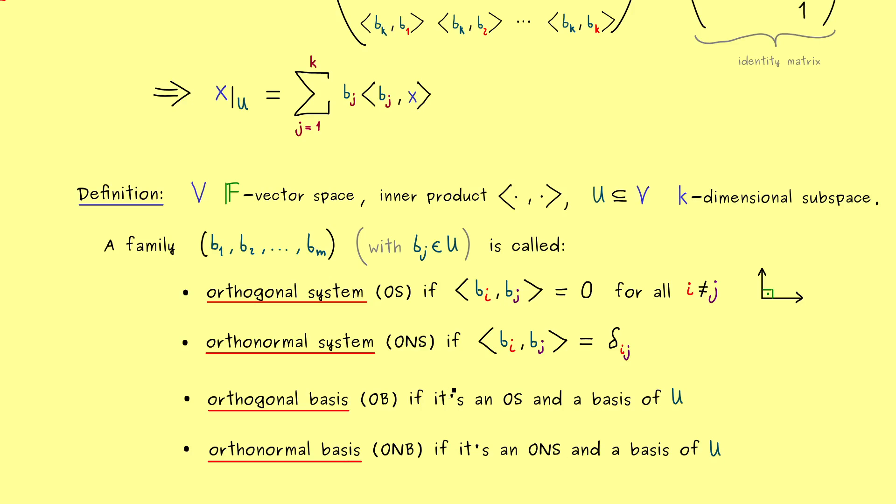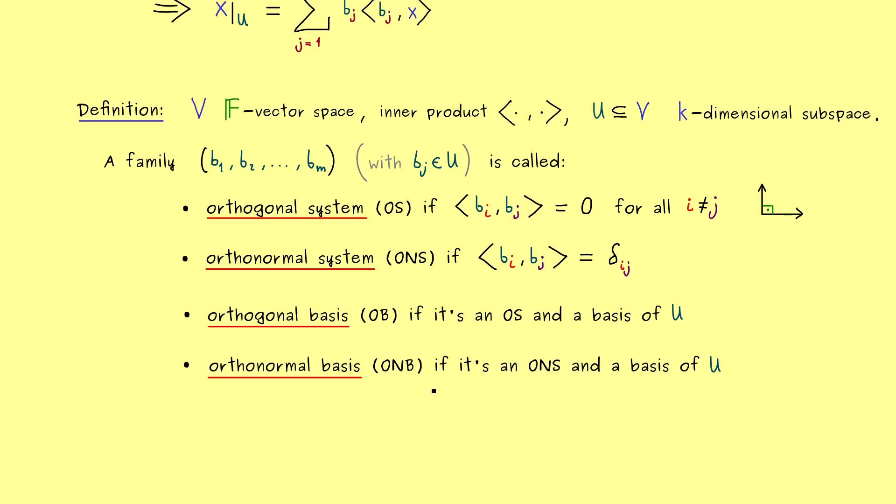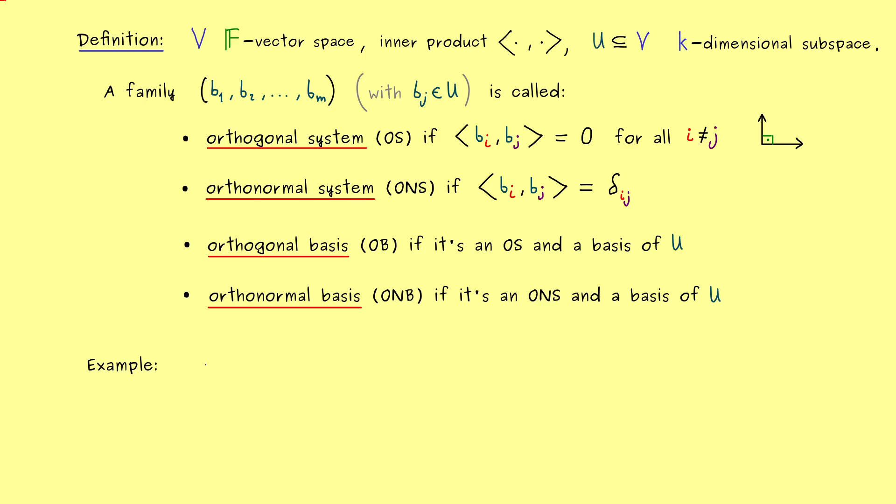Because you already know ℝⁿ with the standard inner product. And of course this is the standard example we should mention here. And maybe let's keep it at three dimensions, because then it's easier to write down. There you also know the standard basis, the canonical unit vectors form a basis. And now it should not be a surprise for you, with respect to the standard inner product, this is an ONB of ℝ³. And you might remember, in ℝ³ it's easy to calculate with this basis, because it's an ONB. And this also translates to more abstract examples, so we can see that we always want to have an orthonormal basis if possible.